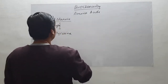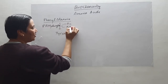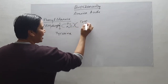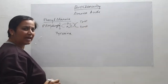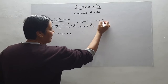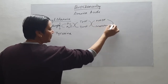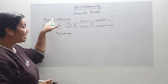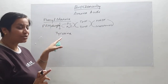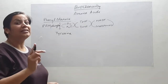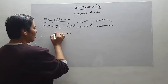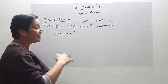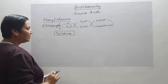Phenylalanine hydroxylase is a very important enzyme. Molecular oxygen is oxidized to water, which is accompanied by tetrahydrobiopterin and NADPH+H. This first reaction is phenylalanine undergoing hydroxylation in the presence of enzyme phenylalanine hydroxylase to form tyrosine, which is a very important product in our body.